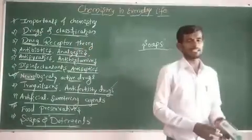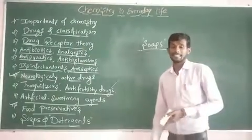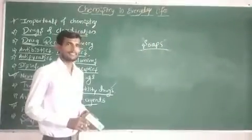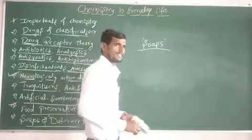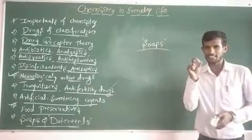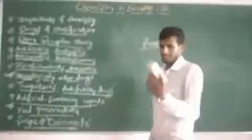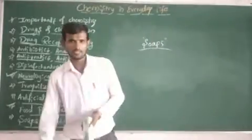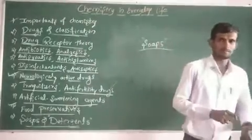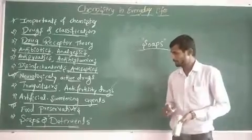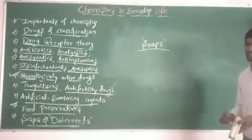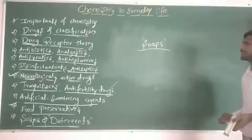In detergents there are two types: one is cationic detergents, another one is anionic detergents. In anionic detergents, the cleaning agent is anionic. These points with some examples are very important in this chapter.